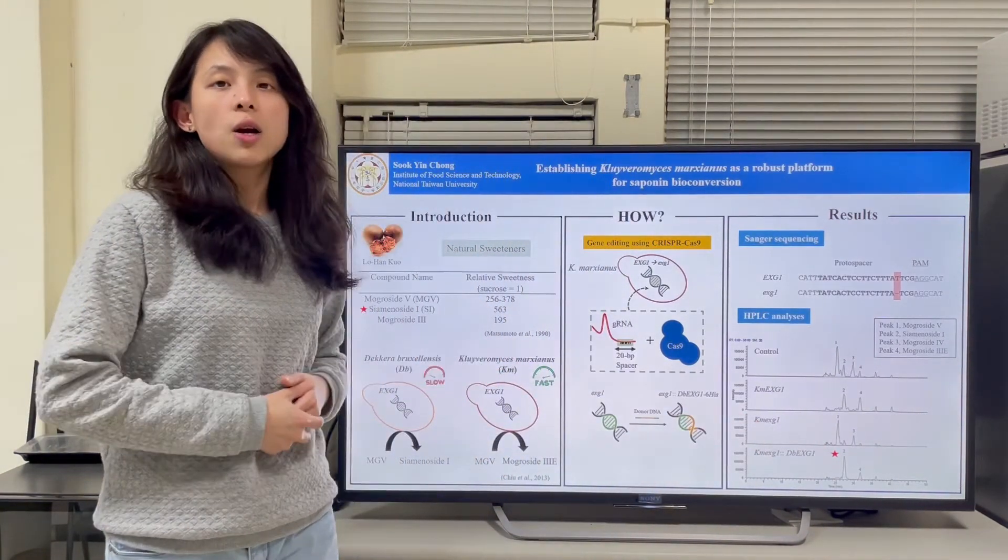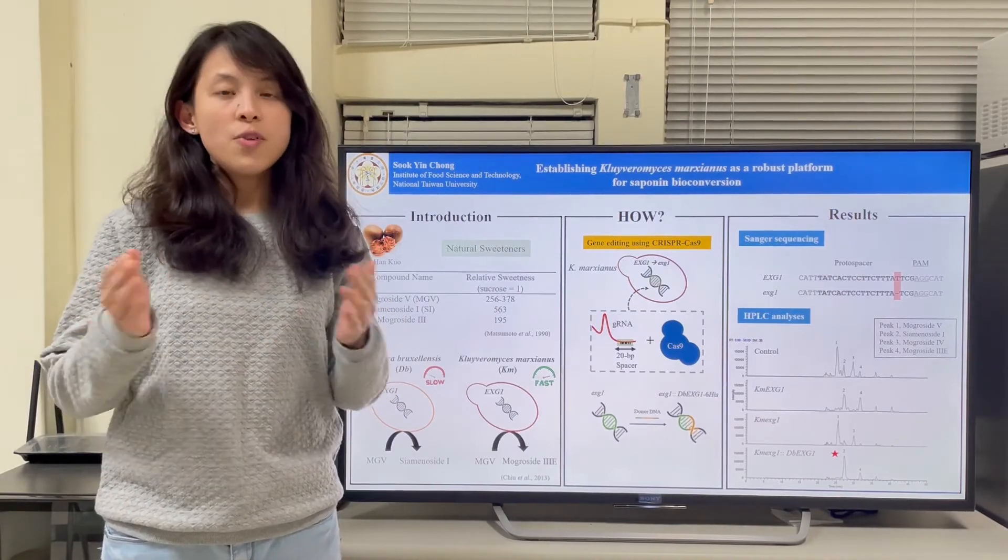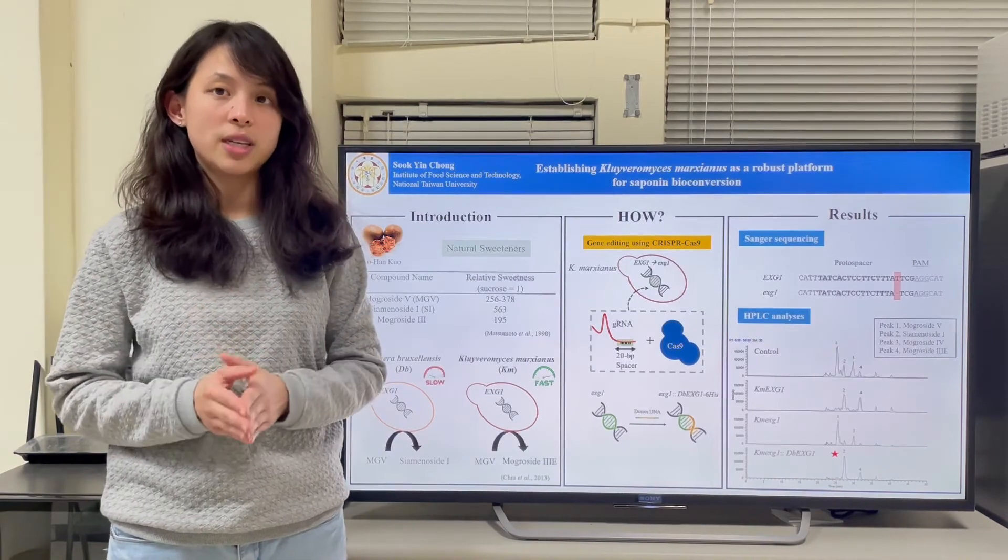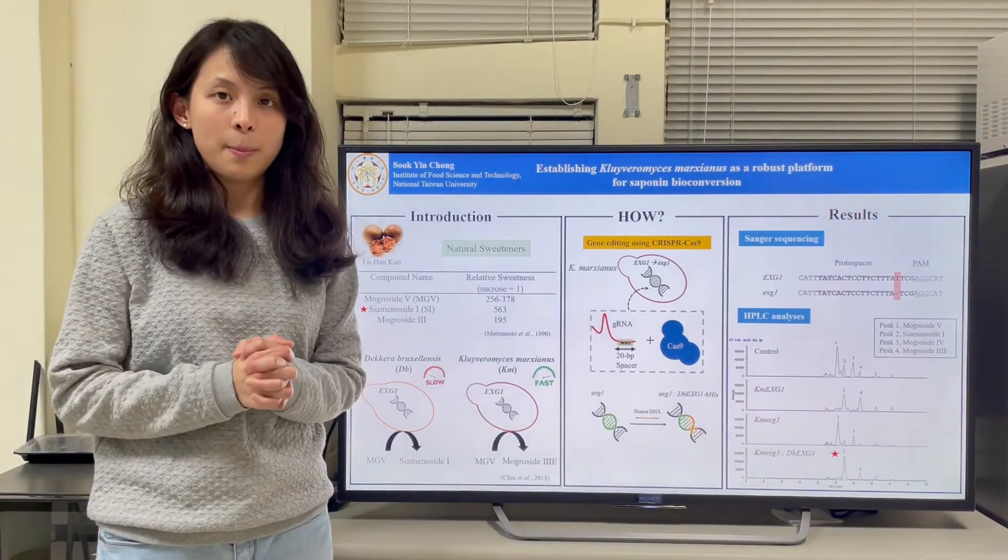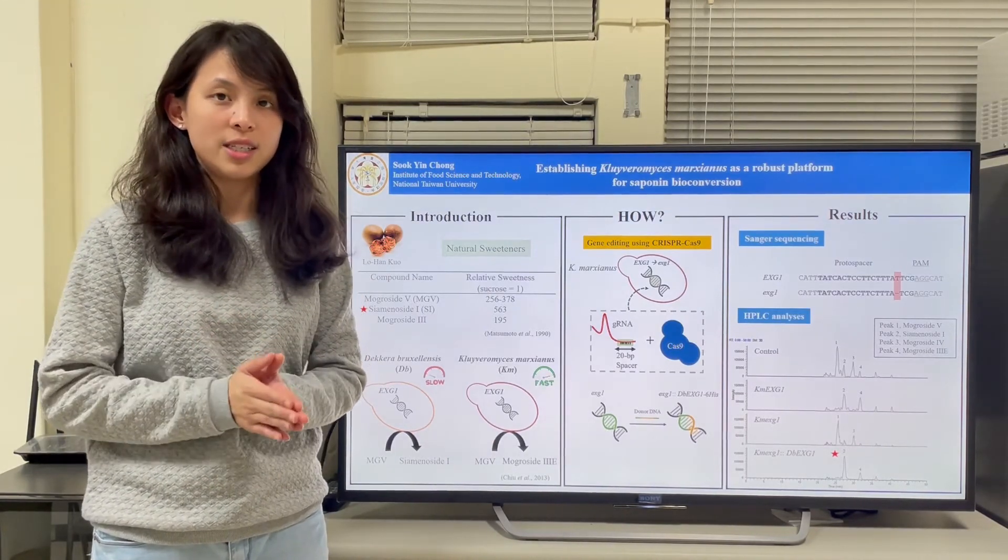So this concludes that our system is able to express the protein that we desire. Further tests are still ongoing to evaluate the feasibility of using KM in the protein expression system. Hopefully, this system can help us in overexpressing proteins that we desire.